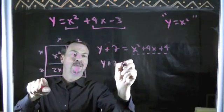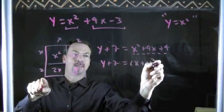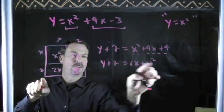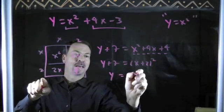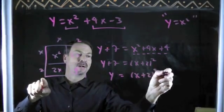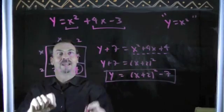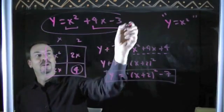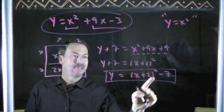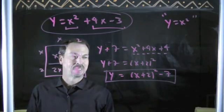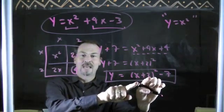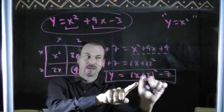And why do I like that? This x squared plus 4x plus 4 is precisely this box. y plus 7 is x plus 2 squared, which means I just make y by itself, subtract 7 from both sides. y is actually x plus 2 squared minus 7.